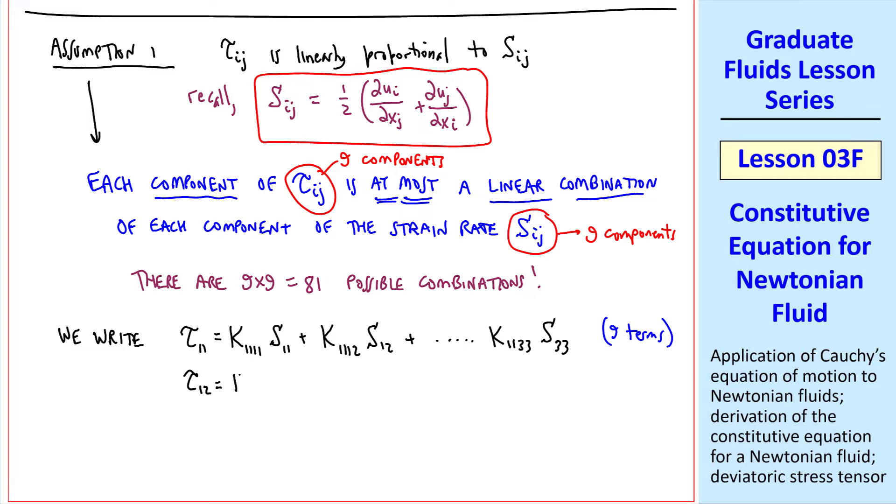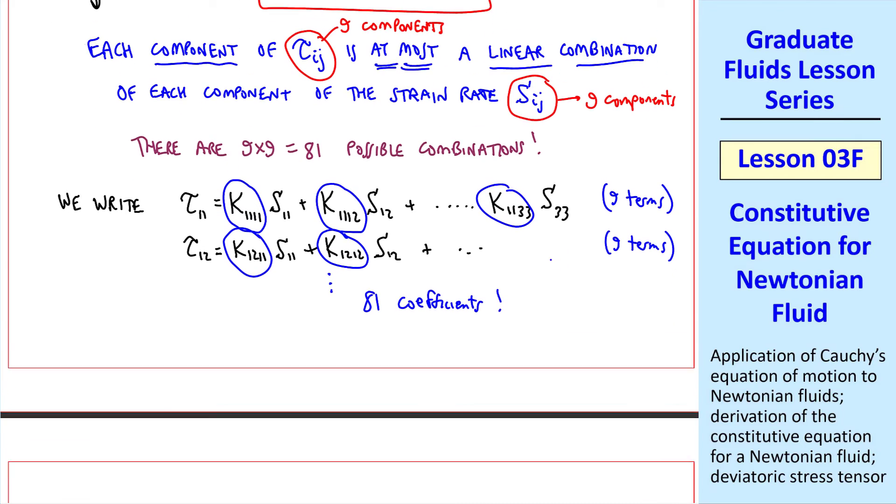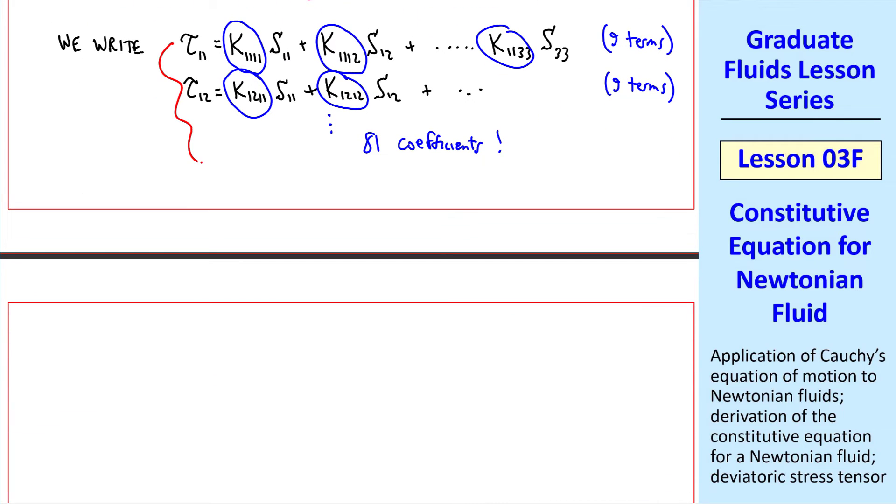Similarly, tau12 would be k1211 s11 plus k1212 s12, etc. Also nine terms. We can see, if we keep doing this, there are 81 coefficients. This is where tensor notation comes in really handy.